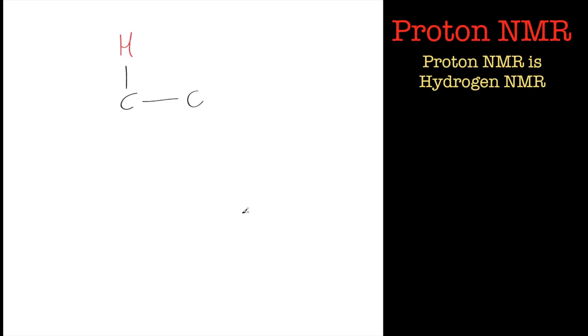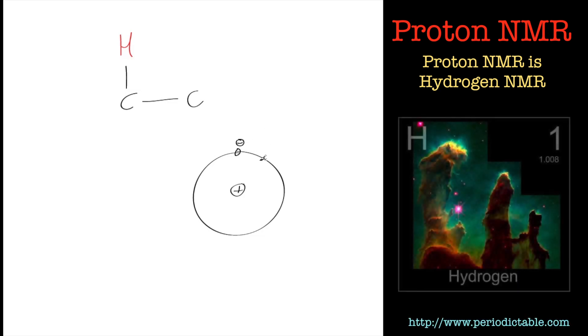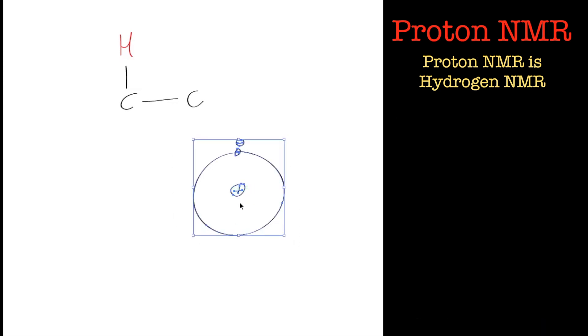Now proton, if you remember, is the nucleus of the hydrogen atom. So it's just a proton. So hydrogen atom is made out of one proton, one electron. So we refer to hydrogen NMR as proton NMR. Just to stop any confusion if I say proton NMR and stuff like that. So we're looking at the nucleus of a hydrogen atom, which is proton NMR.